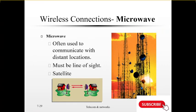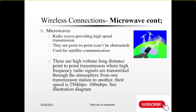Under wireless connections, microwaves are very high-speed waves that only work in a line of sight, as shown in the diagram. Microwaves work under satellite communication and can carry data at very long distances. Microwaves provide radio waves at high-speed transmission and are under a phenomenon known as point-to-point communication, which requires a clear line of sight. That is why they are normally used in satellite communication. There is a high-volume, long-distance, point-to-point transmission where high-frequency radio signals are transmitted through the atmosphere from one transmission station to another. Their speed is between 256 kbps and 100 kbps, as illustrated in the diagram.